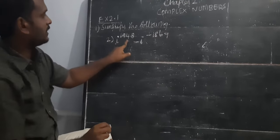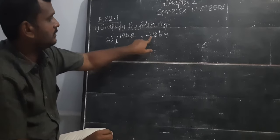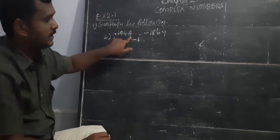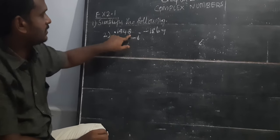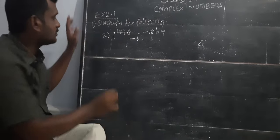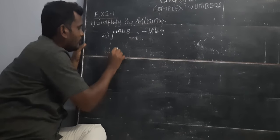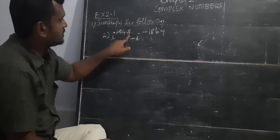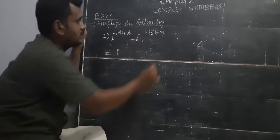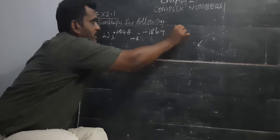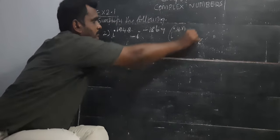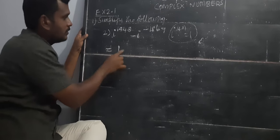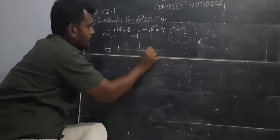Second sum: i power 1948 minus i power minus 1869. First we look at 1948 — the last two digits are 48. 12 fours are 48, so it is in the fourth table. Using the condition i power 4n equals 1, we can put the value of i power 1948 equal to 1. So we have 1 minus 1 divided by i power 1869.